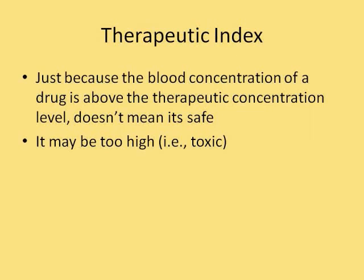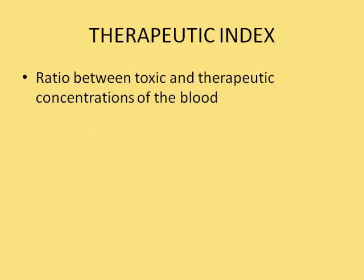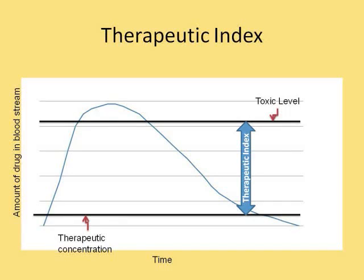The therapeutic index is the ratio between the toxic and therapeutic concentrations in the blood. Just because the blood concentration is above the therapeutic level doesn't mean it's safe — it might be too high, which is toxic. Looking at a graph, we can see that if the dose is too high, the concentration raises to a level above the toxic threshold, causing damage to the patient. The patient needs a lower dose.